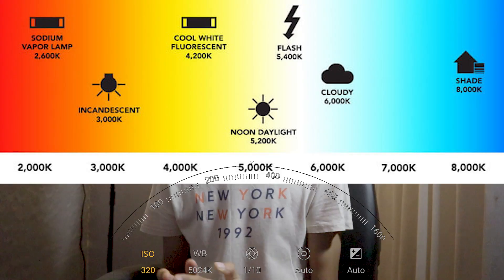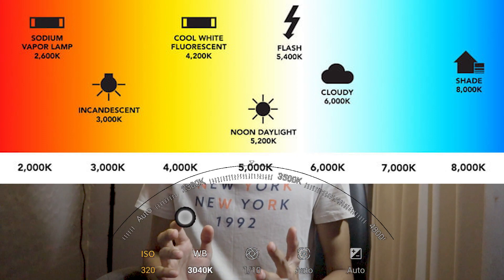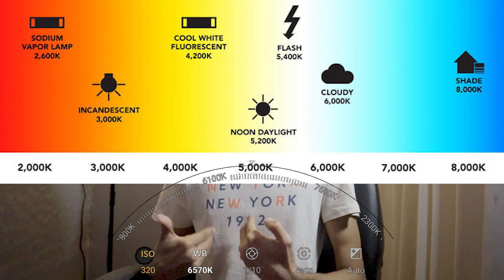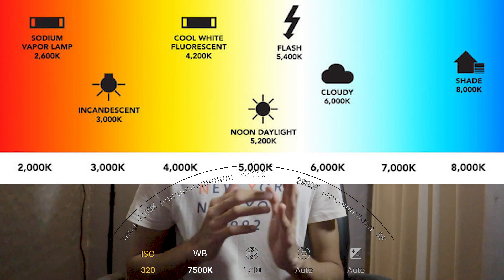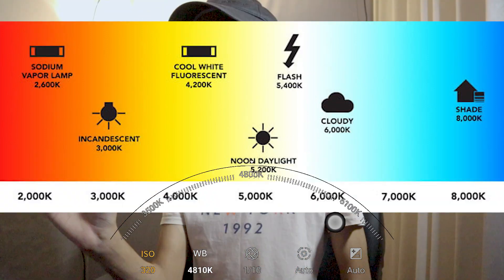Talking about white balance — in the name itself you know the definition: it is balancing the whites. So if your video or photo is on the warmer side, set your white balance accordingly from 5000 down to 2000. But if your video or photo is on the cooler side, set your white balance from 5000 up to 8000.